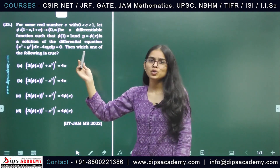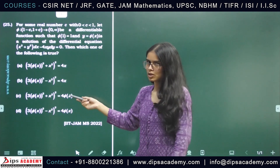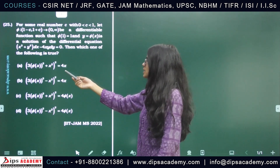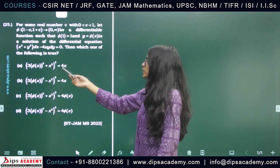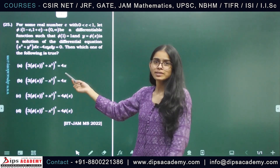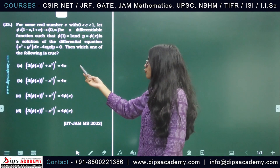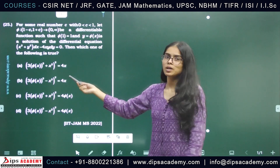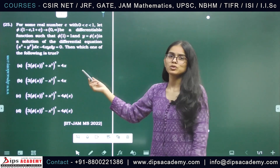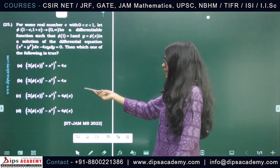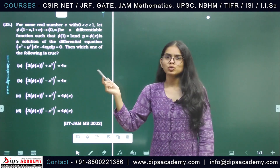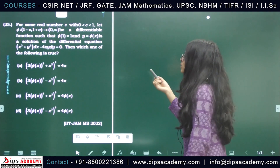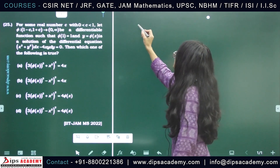We have to choose the true options from the given choices. The options include things like 3φ(x)² + x² whole square equals 4x, or 3φ(x)² − x² whole square equals 4x, and so on. We need to identify the correct one.